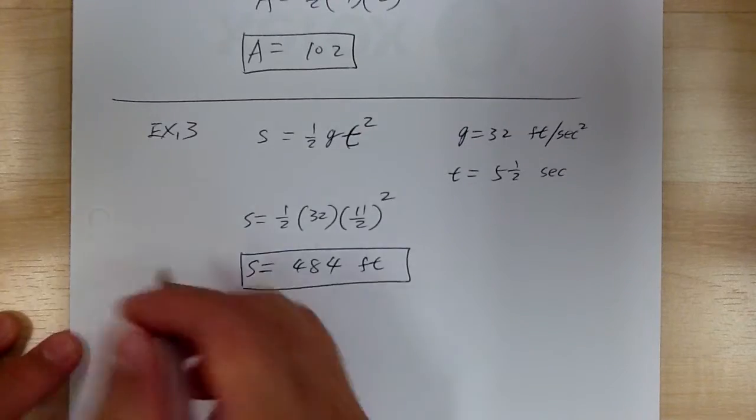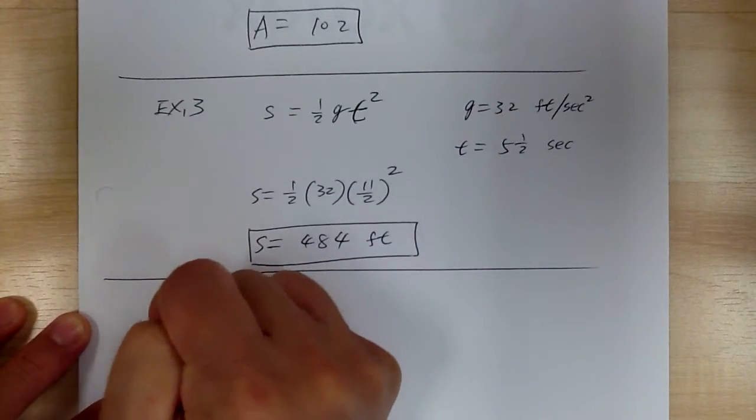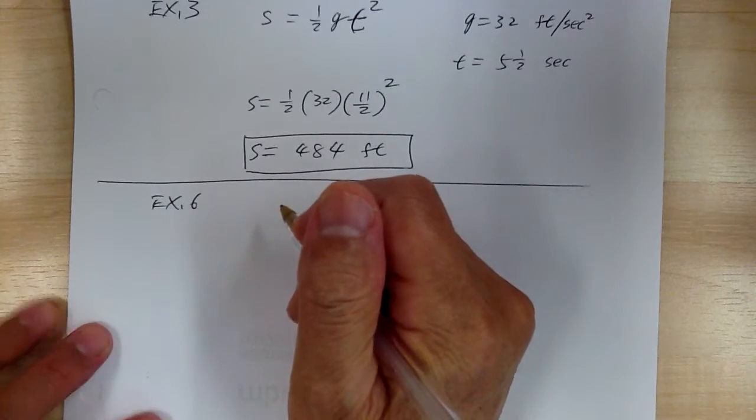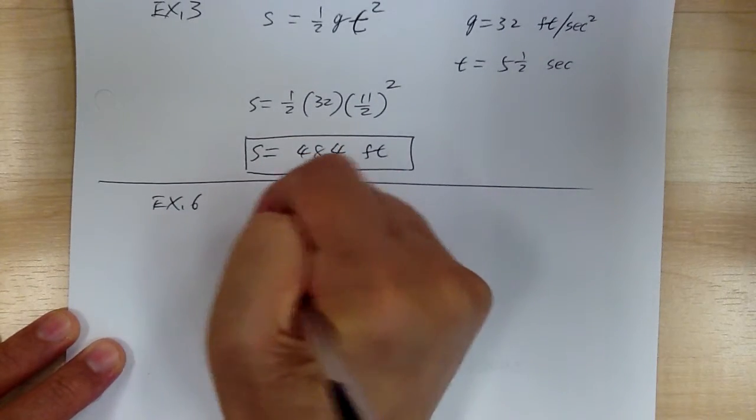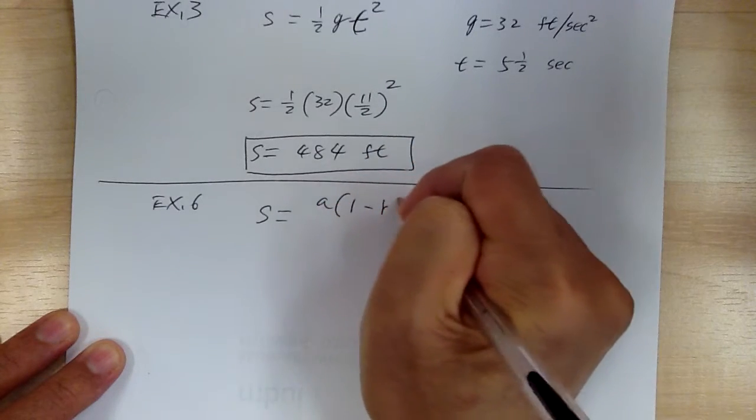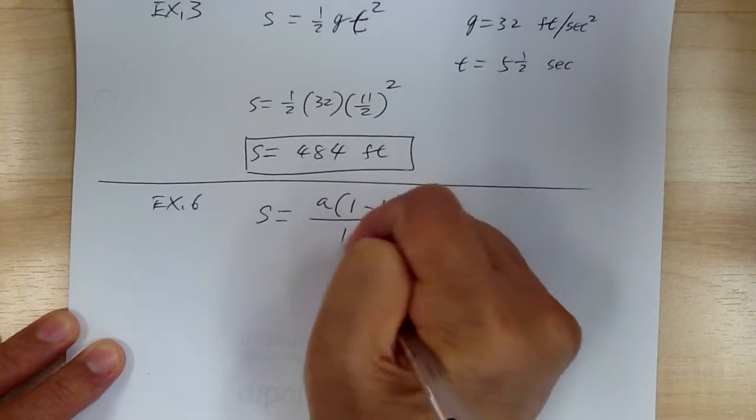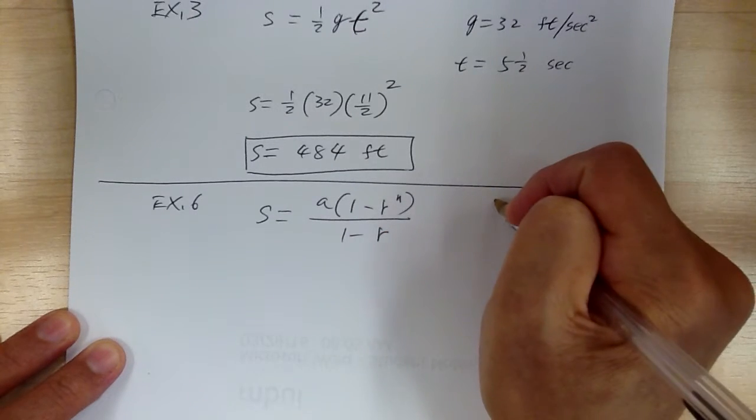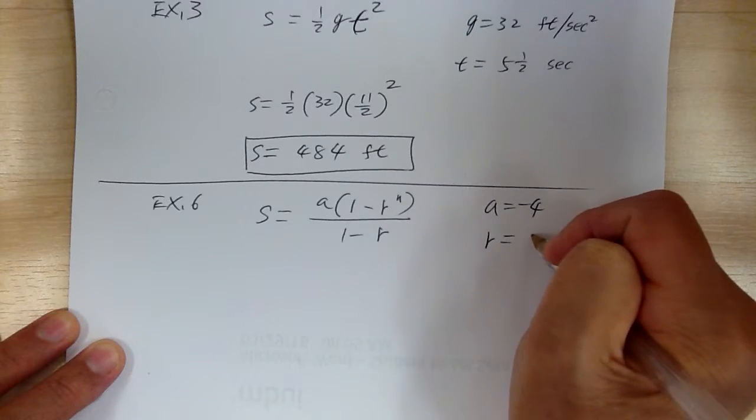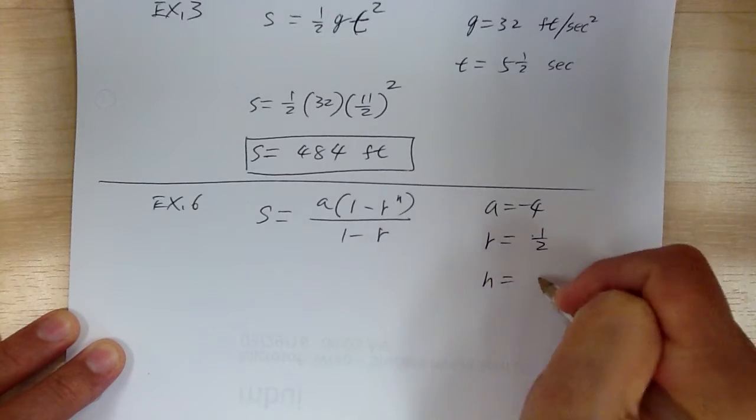And let's go to example 6. So you have the S equal to A times 1 minus R to the N over 1 minus R. And it shows you that A equal to negative 4, R equal to 1 half, and N equal to 3.